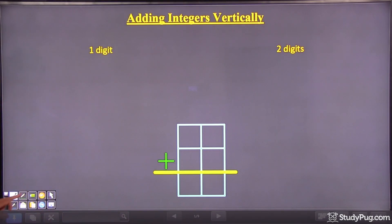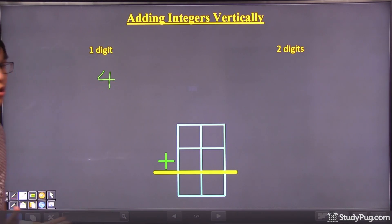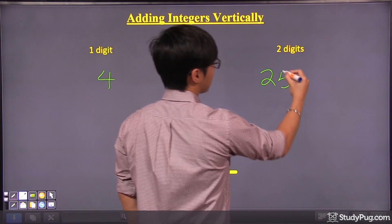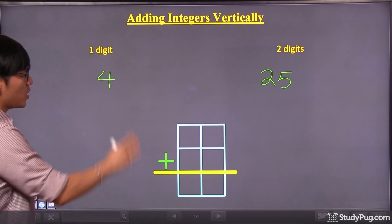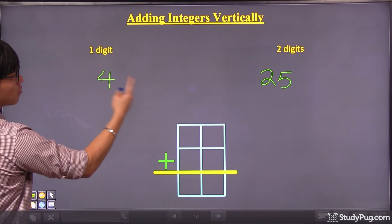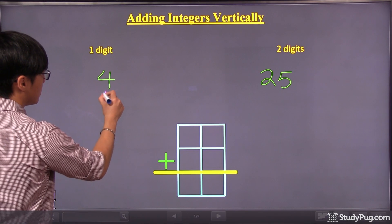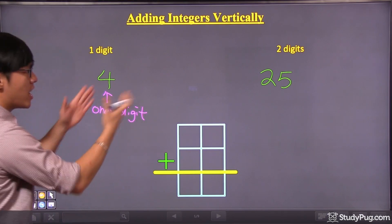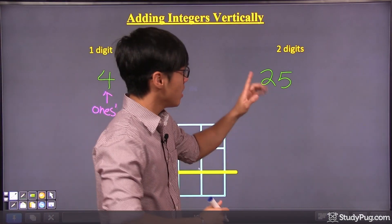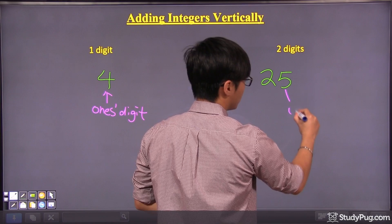We have to look at the one-digit and two-digit numbers. For example, a one-digit number — let's say we have a four. And a two-digit number — let's say we have 25. Let me give you some terminologies. For a number, we want to take a look at it from the right to the left. Since there's only one digit, this digit is called the ones digit. If you have two digits, we read it from right to left, so the rightmost digit is our ones digit.